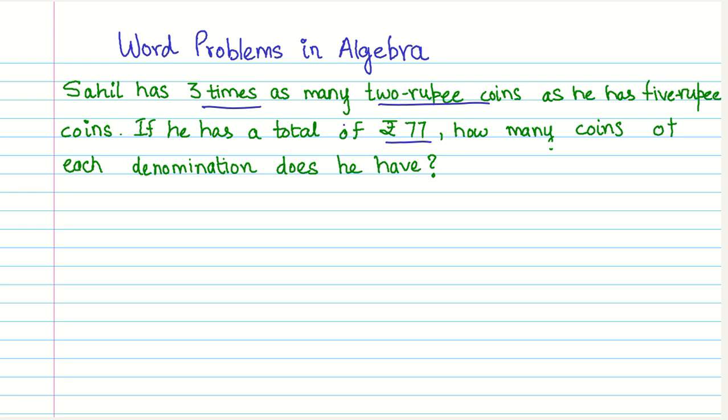Now when you see a lot of numbers like this and you want to know what is the unknown, look at what is being asked. So in this case the problem asks us how many coins of each denomination does he have. What denominations are being talked about in this statement? It is the number of two rupee coins and the five rupee coins.